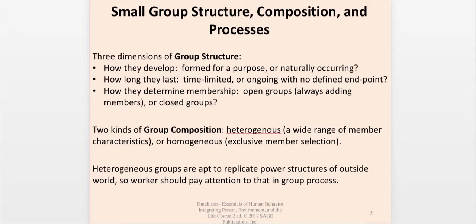When we talk about group structure, the authors discuss three dimensions. First, how they developed — are they formed for a purpose or do they occur naturally? Second, how long do they last — some groups are time-limited, others go on indefinitely with no end point defined. Third, how membership is determined — are they open groups where members come and go and can be added at any time, or closed groups where persons start and finish together? Each type has valid usefulness depending on the type of group.